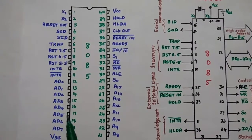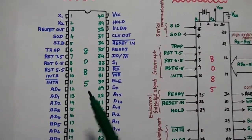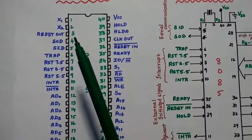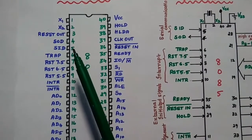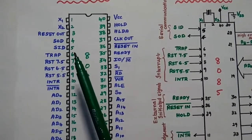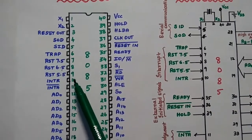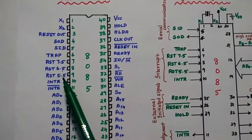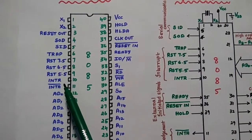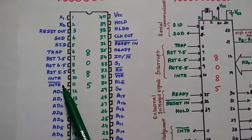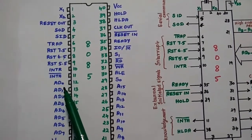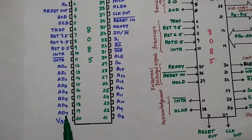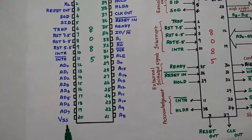We have completed the left-hand side pins 1 to 20. To recap: X1 and X2 for crystal oscillator, then Reset Out, fourth and fifth pins for serial communication, the next five pins 6 to 10 for interrupts (Trap, RST 7.5, RST 6.5, RST 5.5, and INTR), then interrupt acknowledgement INTA bar, then multiplexed address and data lines AD0 to AD7, and then the ground signal at the 20th pin.